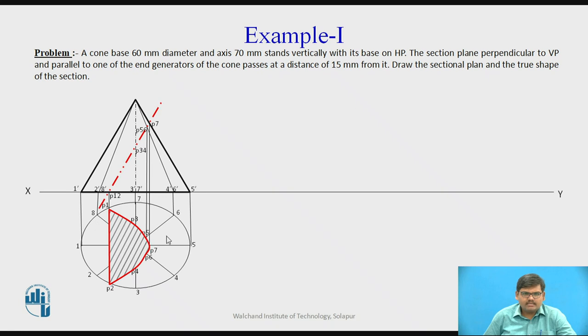By joining all these points, you get the required sectional top view of the cone. This area is your desired sectional top view. The remaining portion of the cone is darkened, and the cut part is removed.